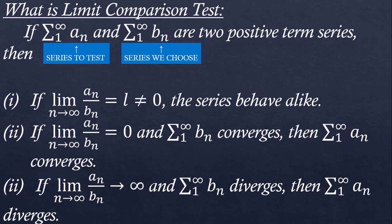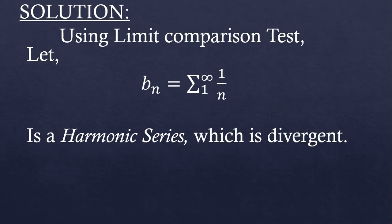So as I explained earlier, we will take 1 by n as our b_n series to solve this problem. First, we call the series we chose as b_n, which is a harmonic series and it diverges.